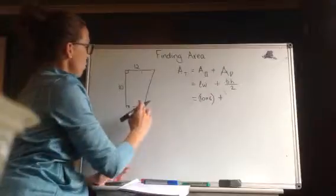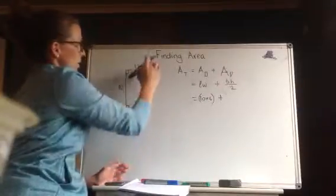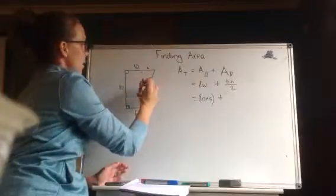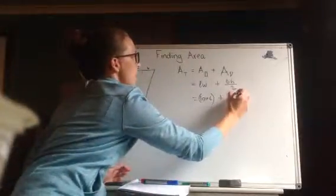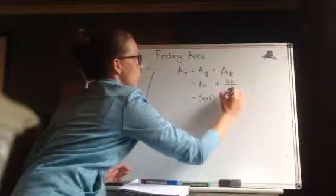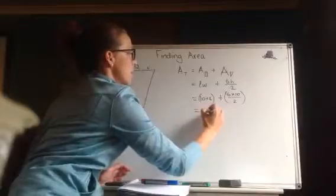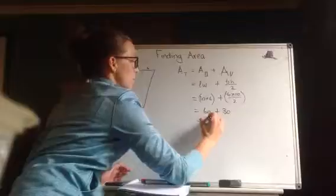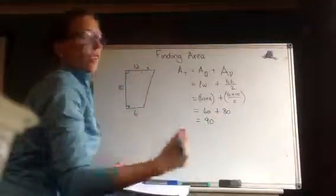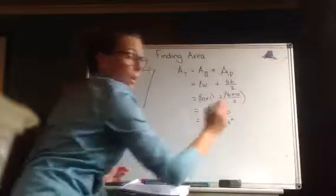Plus, looking at my triangle, my base, this bit would be six because twelve take six would leave me with six here. So six times height which is ten all divided by two. And then I could add those things together, so I've got sixty plus sixty on two which is equal to ninety. And I've got no units, so we just write units squared because we're talking area.